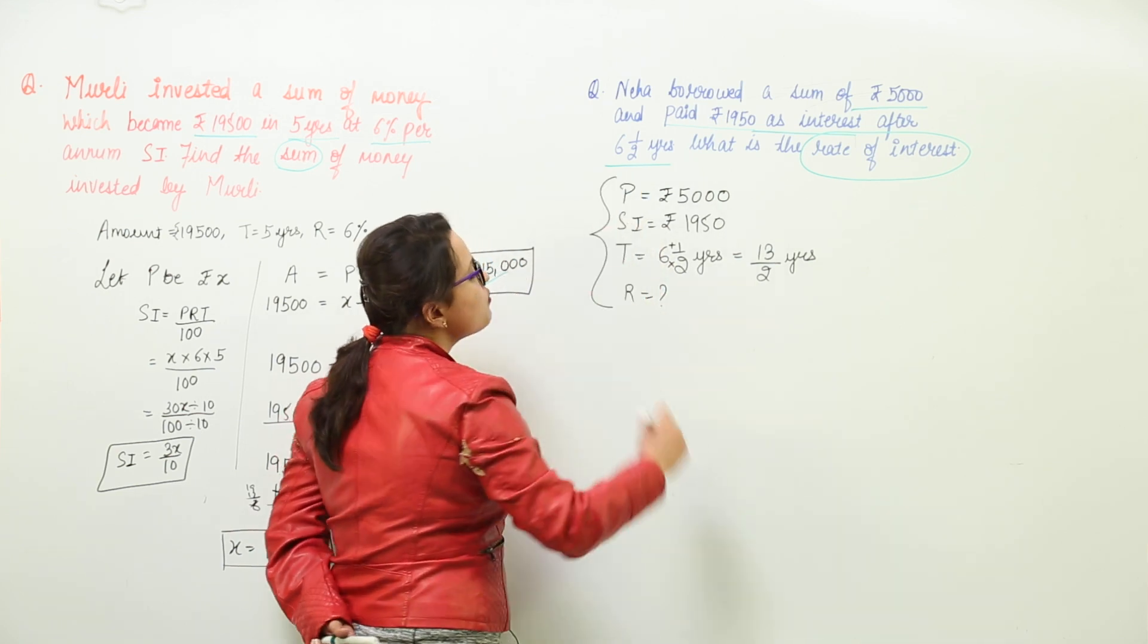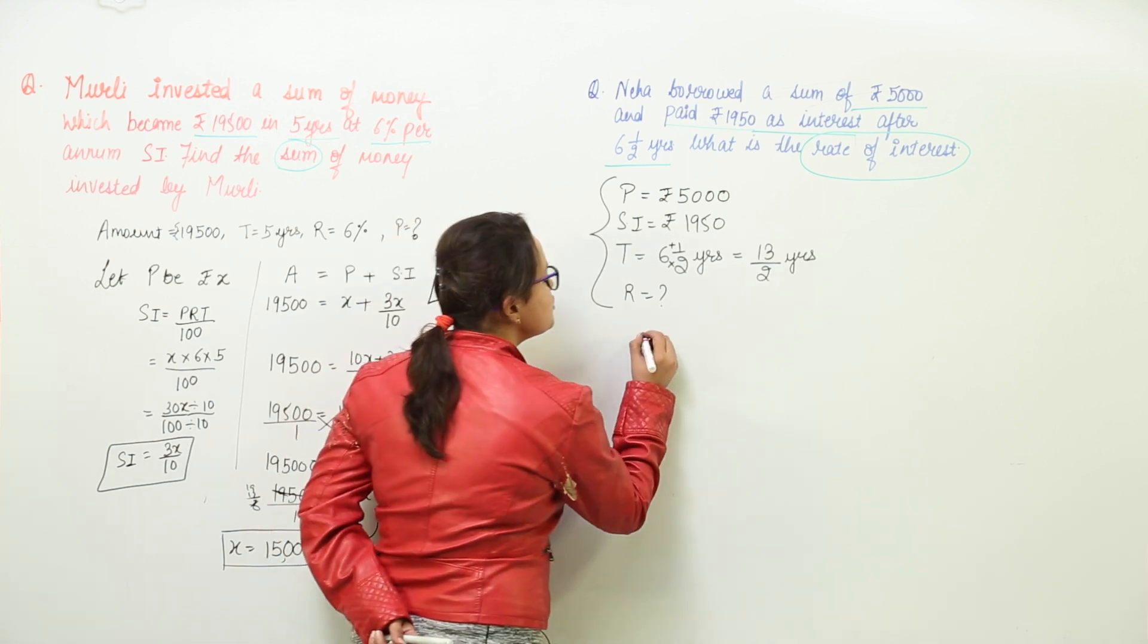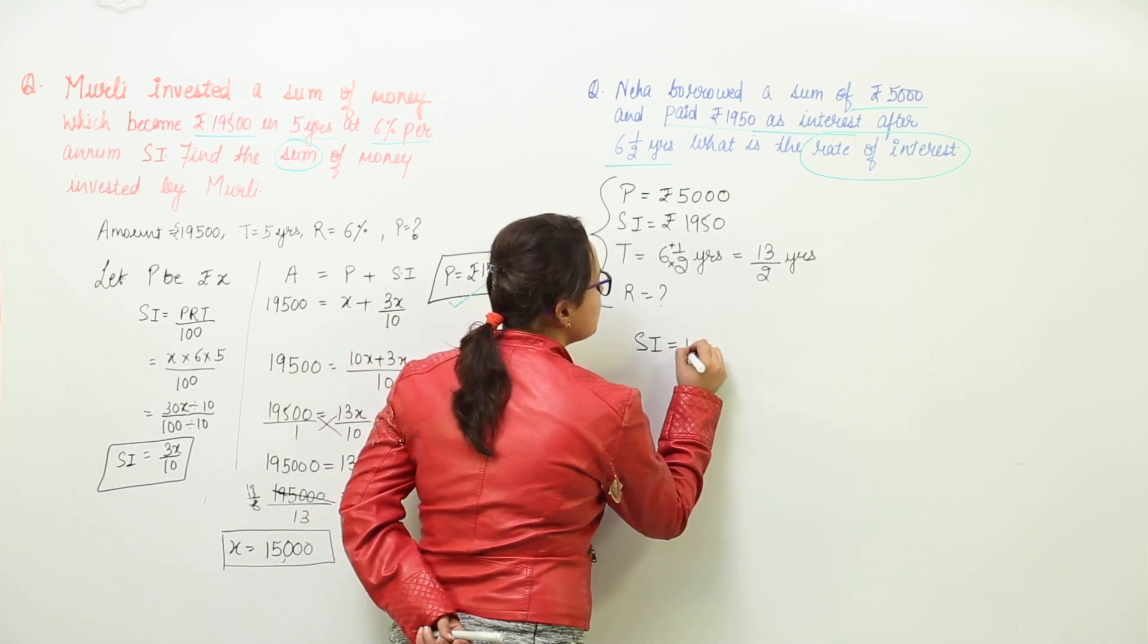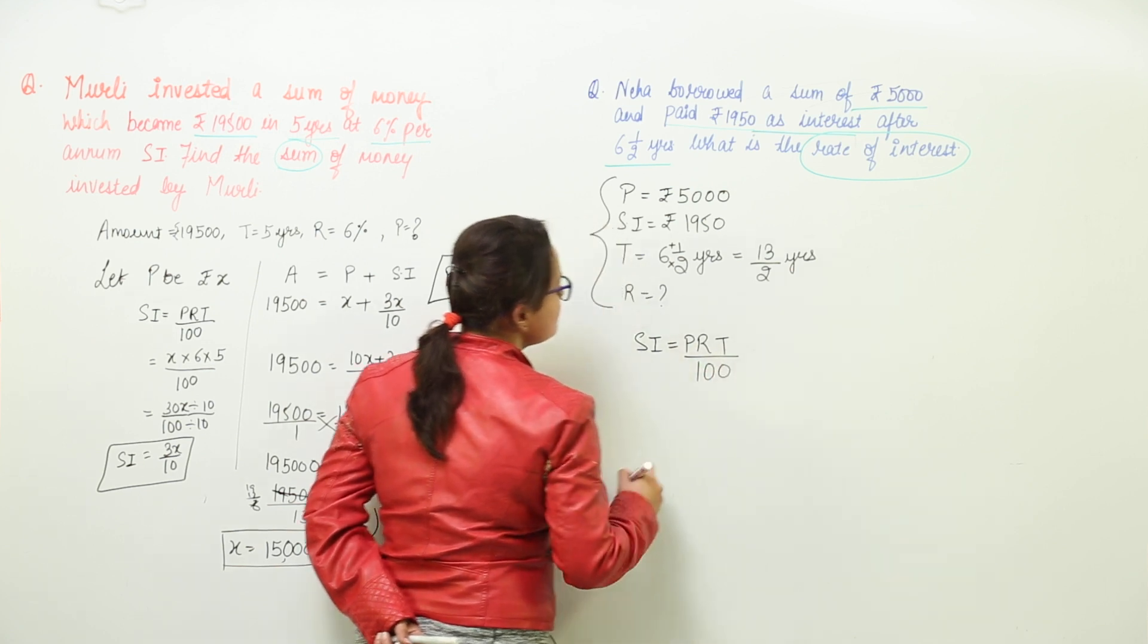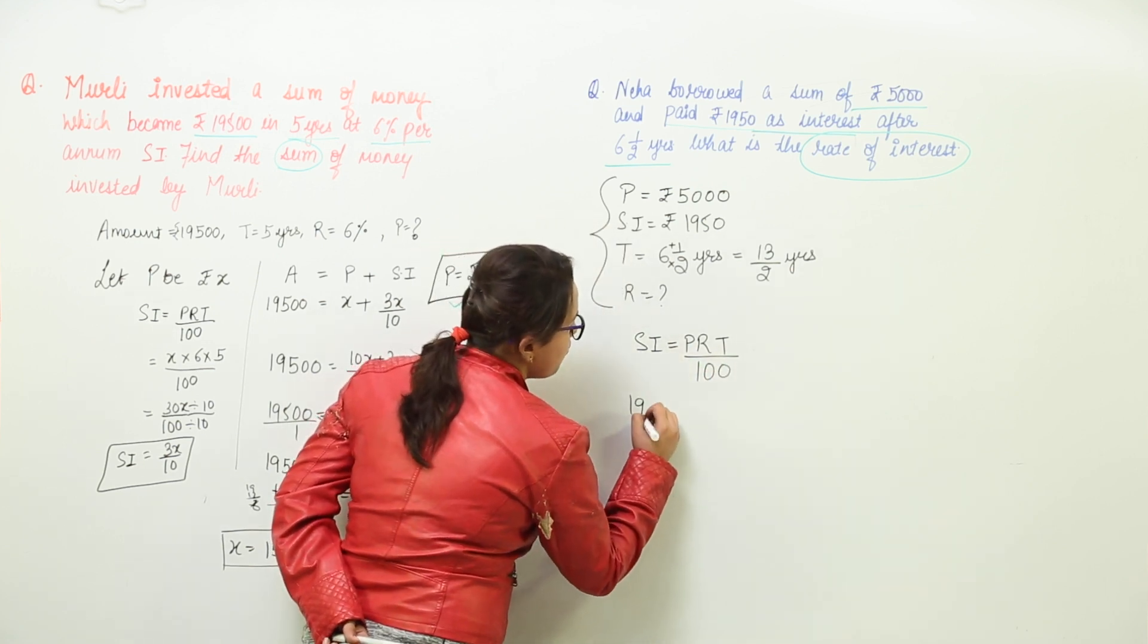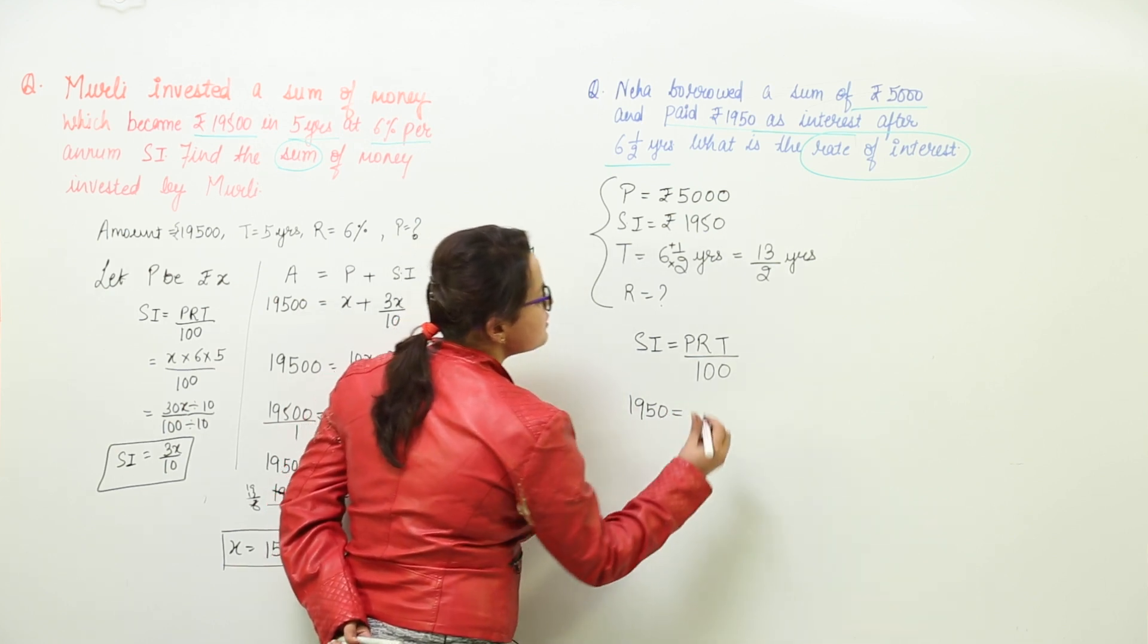Can you think of any formula which has all the 4 quantities in them? Yes, we do have and which is simple interest equal to PRT upon 100. Let us place the values 1950 is the simple interest equal to what is the principle?